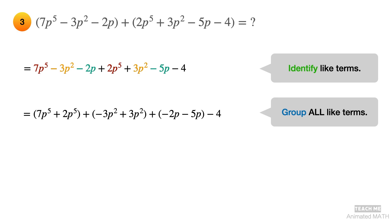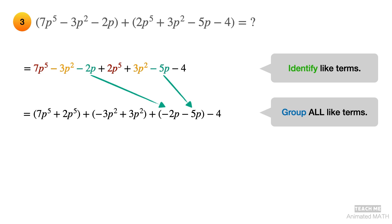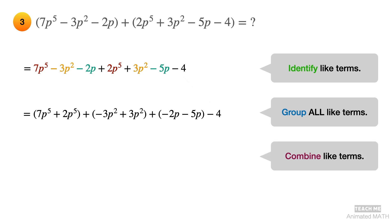Next, group all like terms and arrange them in standard form. Group the terms with p raised to 5. Group the terms with p squared. Group the terms with p. There is only one constant. Last, combine like terms using addition and subtraction. And the final answer is 9p raised to 5 minus 7p minus 4.